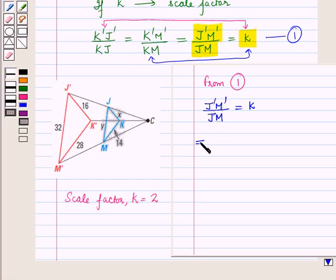Now this implies, as we can see, J'M' is 32 upon JM which is y, and this is equal to k that is the scale factor which is equal to 2, and this further implies y is equal to 32 upon 2 which is equal to 16.